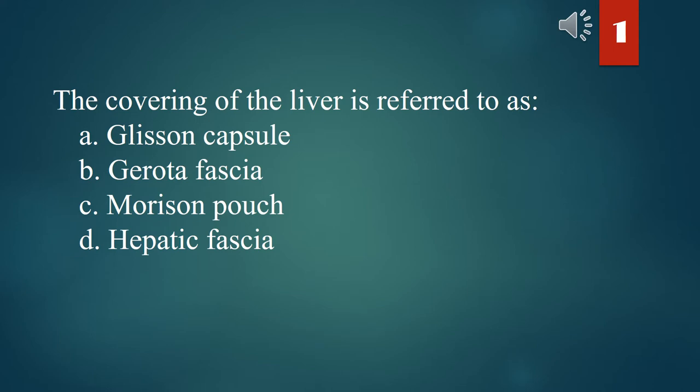The covering of the liver is referred to as: A. Glisson's capsule. B. Gerota fascia. C. Morrison pouch. D. Hepatic fascia. The answer is A. Glisson's capsule.